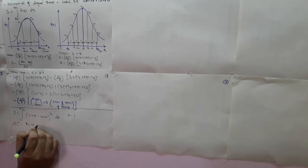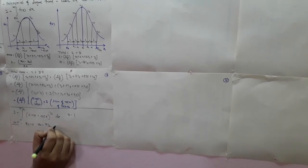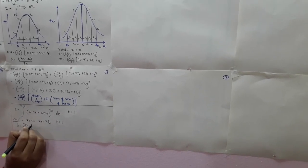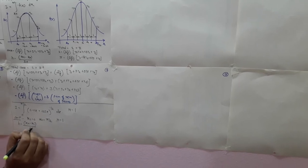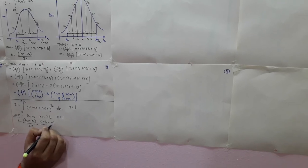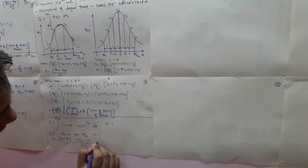We solve using Simpson's 3/8 rule. We find: x₀ = 0, xₙ = π/2, and n = 1. Therefore h = (xₙ − x₀) / (3 × n) = (π/2 − 0) / (3 × 1) = π/6. So h = π/6.